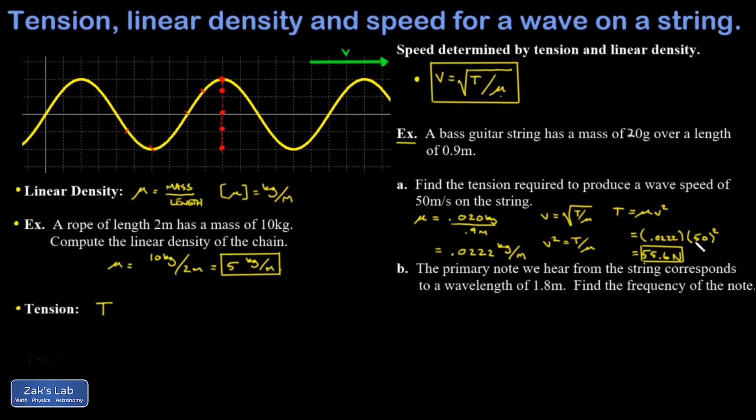In part b, that is a bit of a review example, we're told that the primary note that we hear from the string corresponds to a wavelength of 1.8 meters. You should notice that's twice the length of the string, and we'll get into why this is true when we talk about resonance. And I'll go ahead and post a link to that video. And we're asked for the frequency of the note in this case.